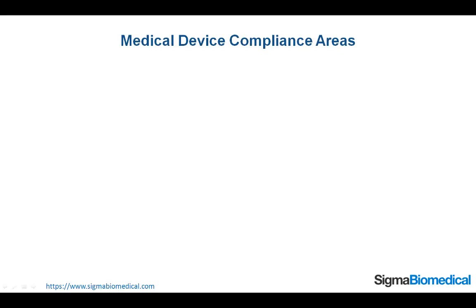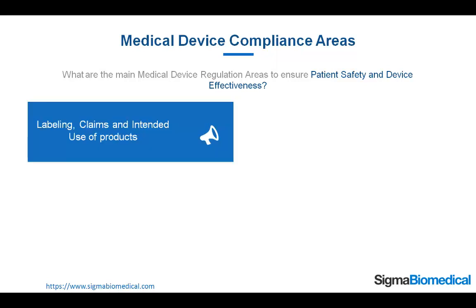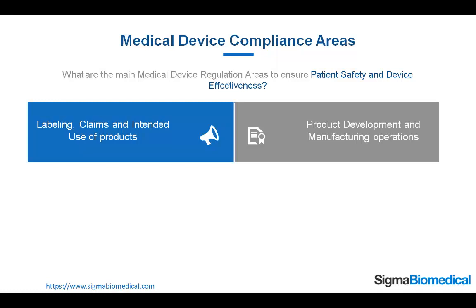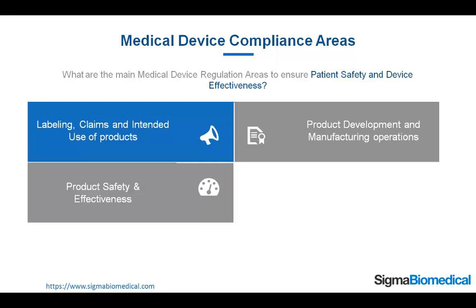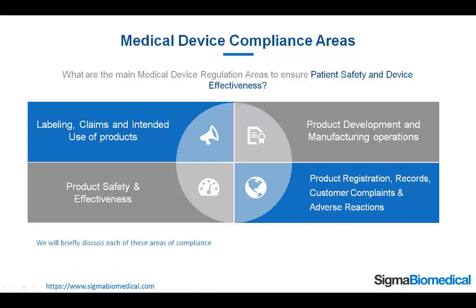Medical Device Compliance Areas. What are the main medical device regulation areas to ensure patient safety and device effectiveness? Labeling claims and intended use of products; product development and manufacturing operations; product safety and effectiveness; and product registration, records, customer complaints, and adverse reactions. We will briefly discuss each of these areas of compliance.